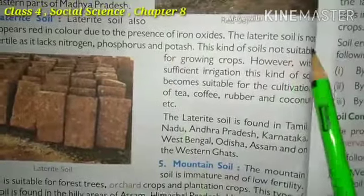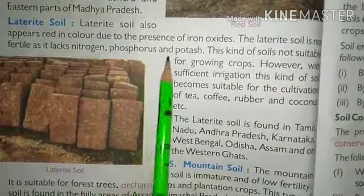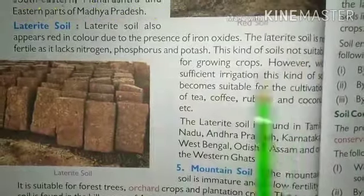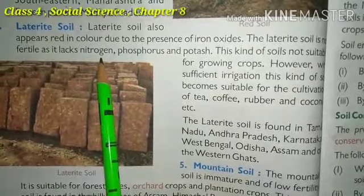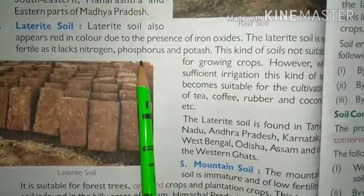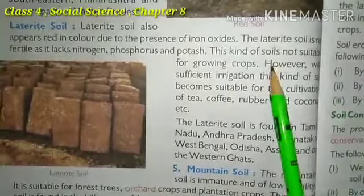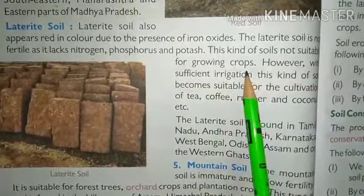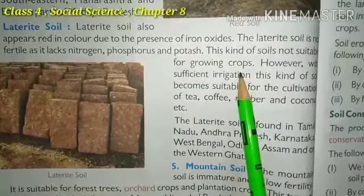The laterite soil is not fertile as it lacks nitrogen, phosphorus, and potash. Due to the deficiency of these minerals, it is not fertile. This kind of soil is not suitable for growing crops. Laterite soil is not productive for crop cultivation.